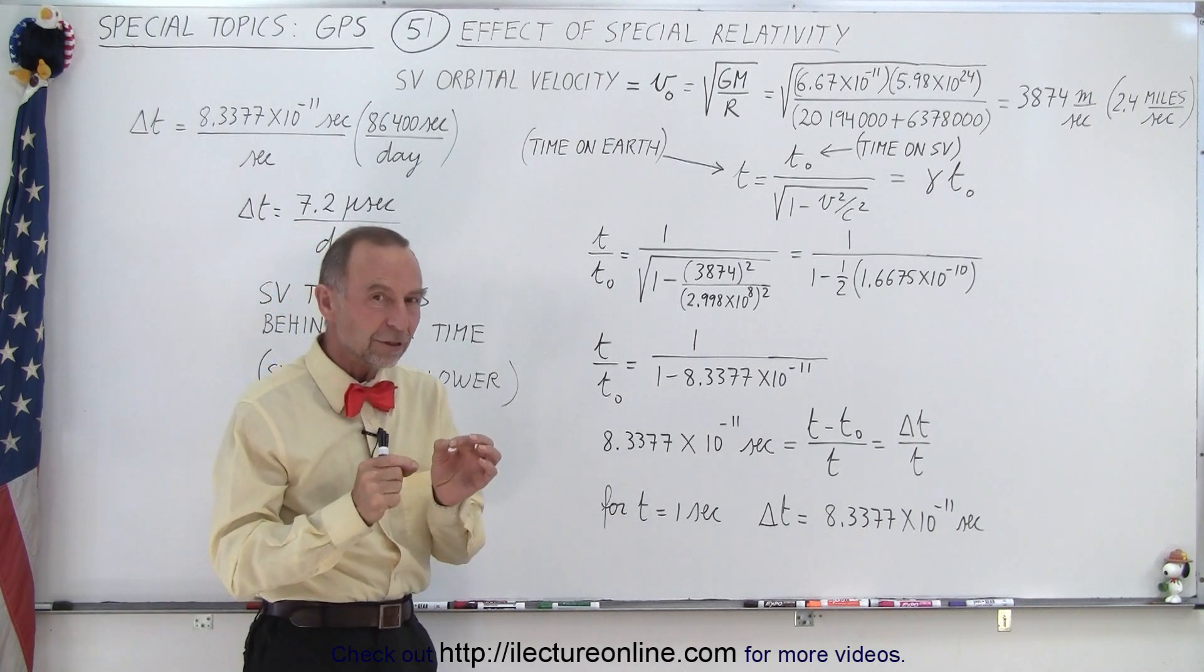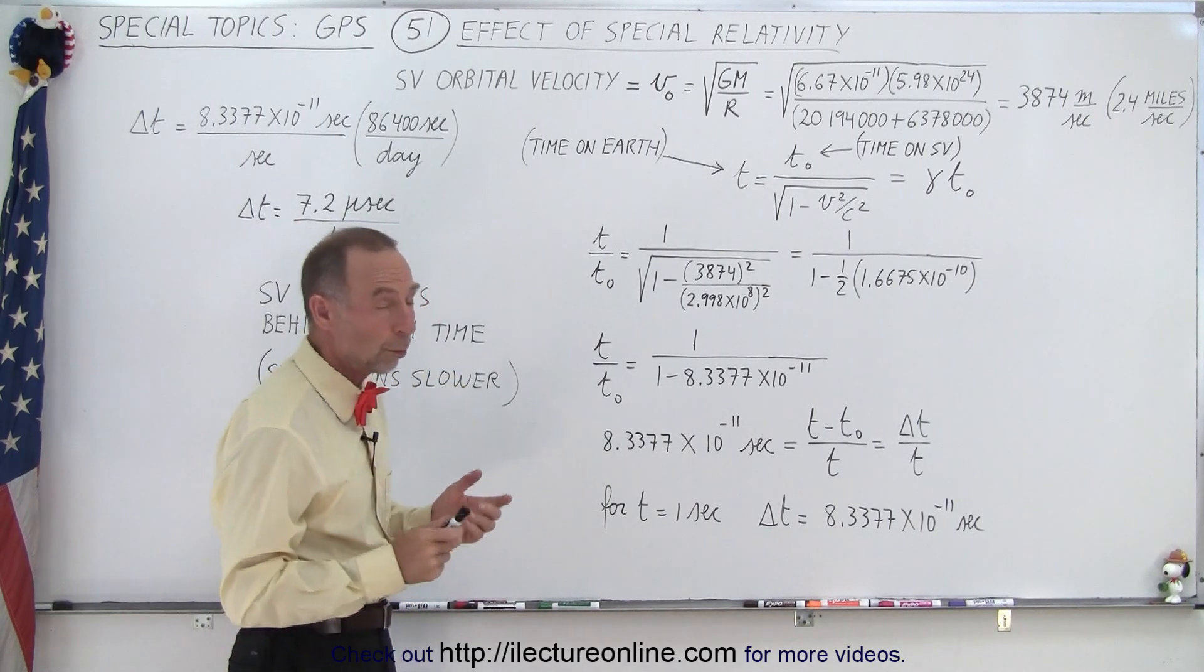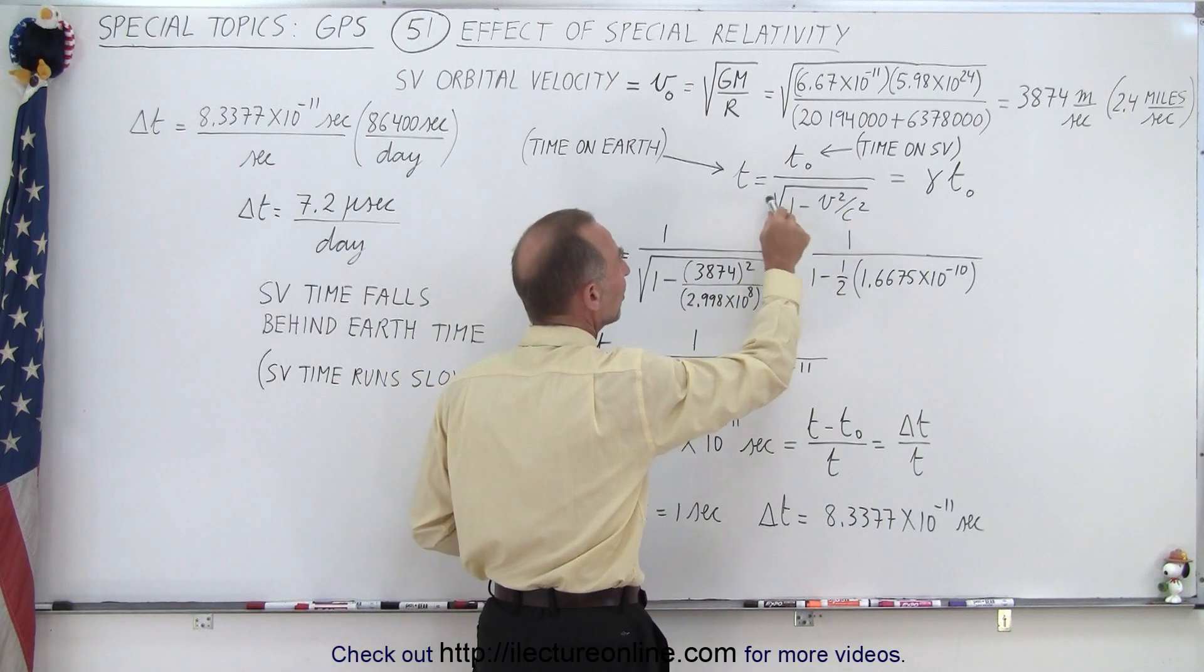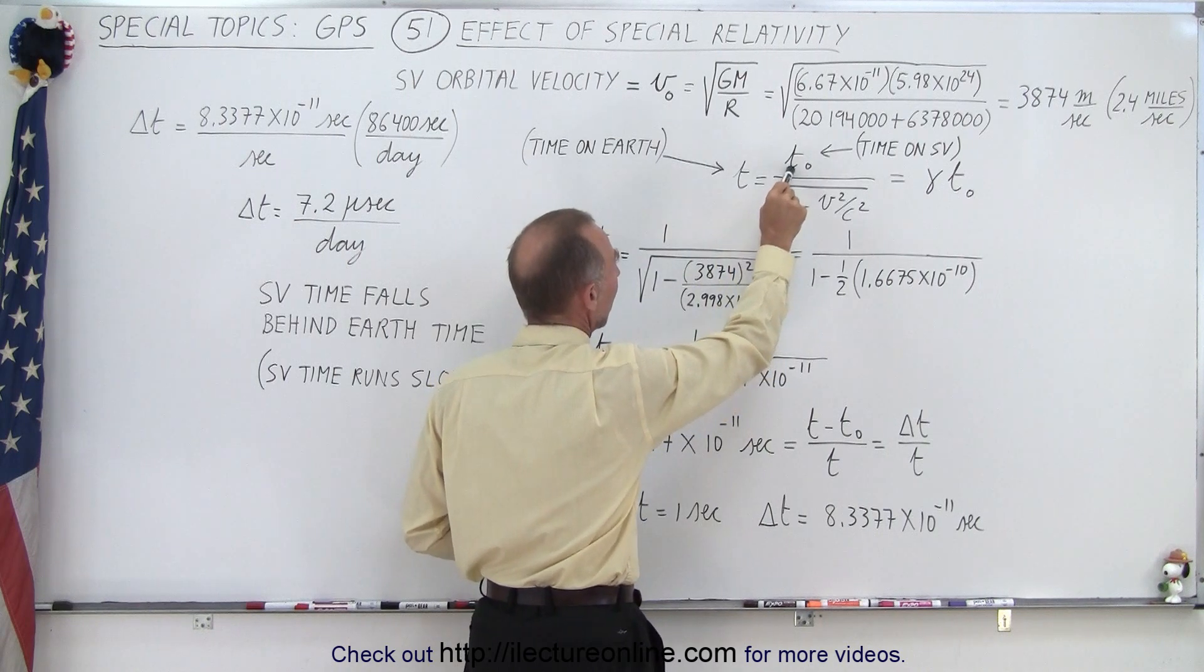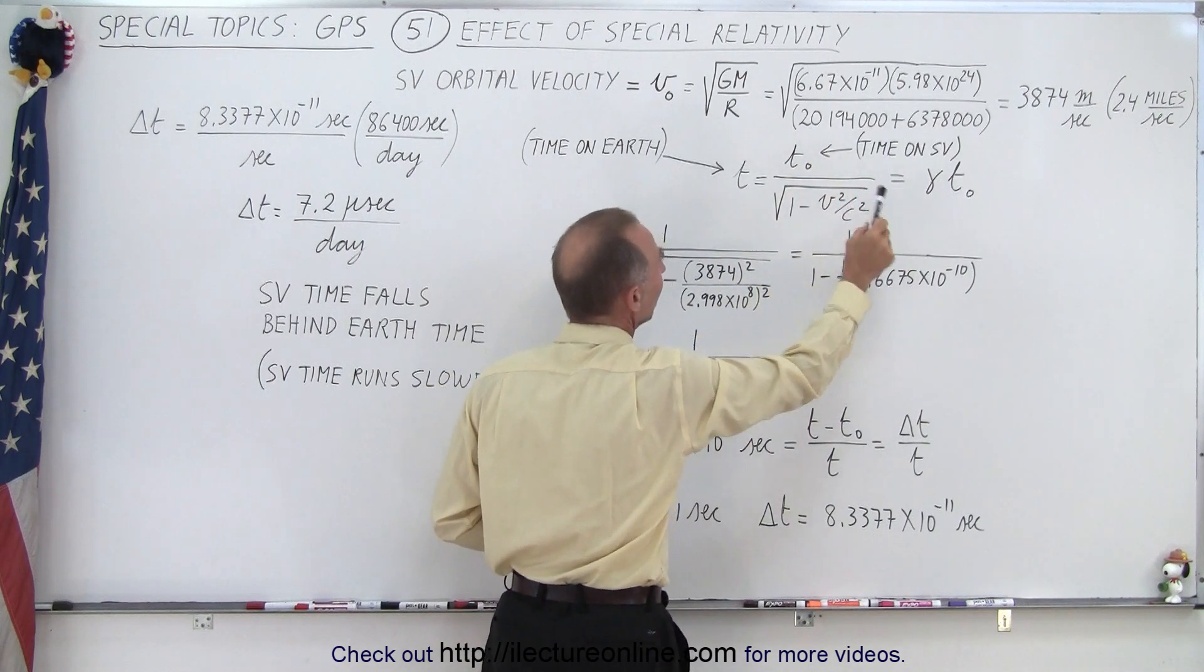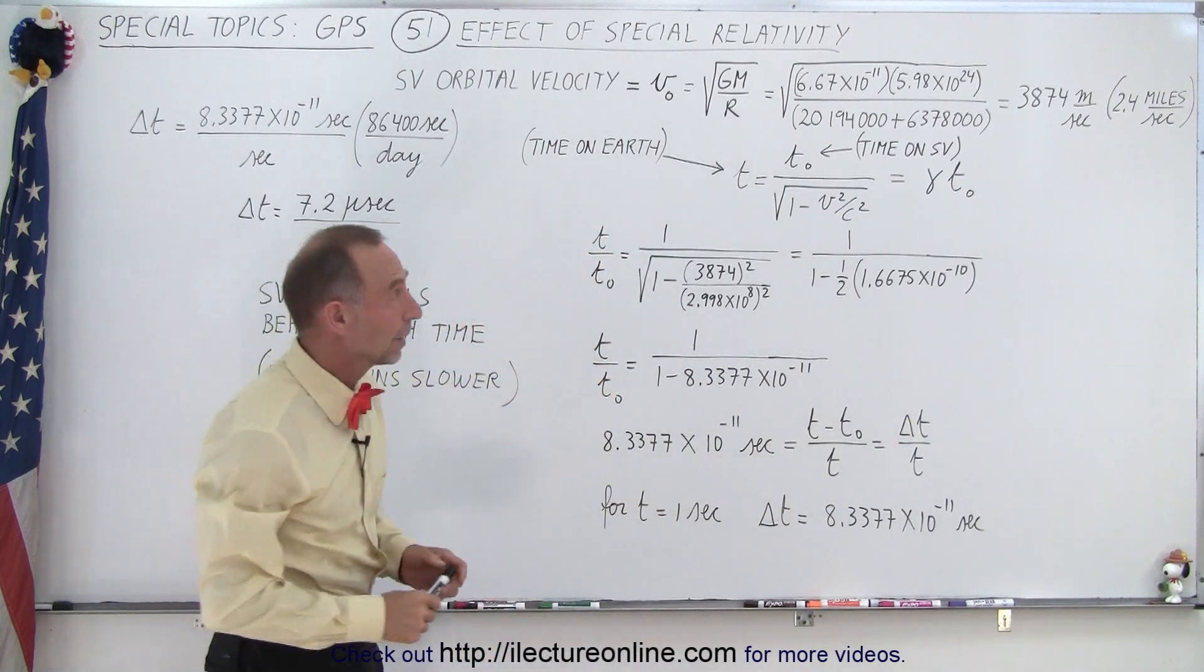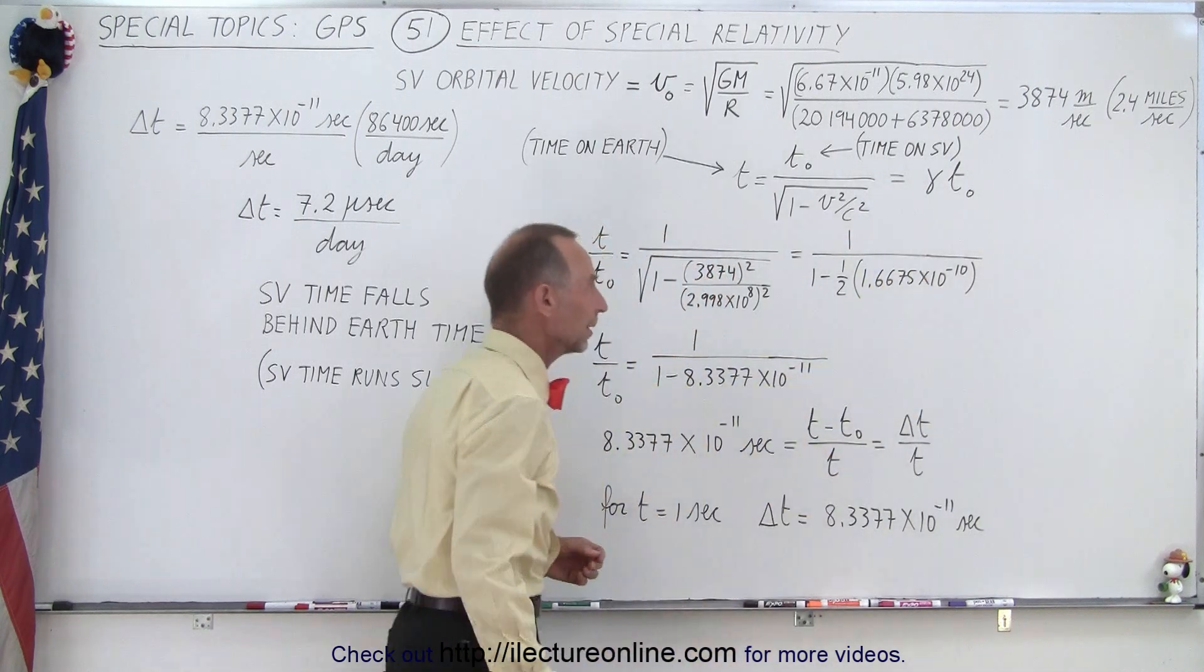That's enough to affect the time on board the satellite. How do we figure that out? Here's the time dilation equation, where we say that the time as measured on Earth is equal to time as measured on the SVs, divided by the square root of 1 minus V squared over C squared. 1 over the square root of 1 minus V squared over C squared is also sometimes called gamma.